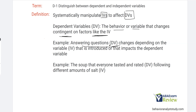Answering questions, the DV, changes depending on the variable that is introduced or that impacts the dependent variable. Or consider the soup that everyone tasted and rated — the dependent variable — following different amounts of salt. The ratings might have changed based on the salt, and we want to be sure that it was only the salt content. Let's say without you knowing it, your sous chef came behind you and also added carrots. What if it was the carrots that changed the rating? Well, that would be a confound, because you weren't controlling that. We're going to talk about that again next video.